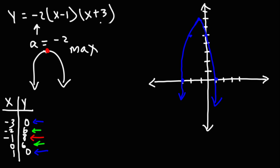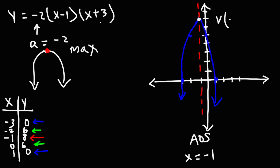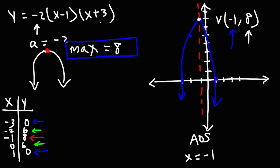That's a rough sketch of the parabola opening downward. The axis of symmetry is the line that passes through the vertex, so the AOS is x equals negative 1. The vertex is at negative 1 comma 8, and the maximum value is the y-coordinate — 8 — located at x equals negative 1. The x-coordinate tells you the location of the point, and the y-value tells you the value of the function at that point.